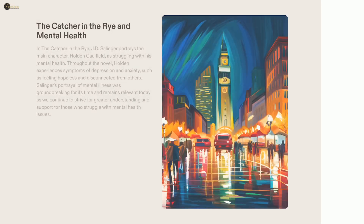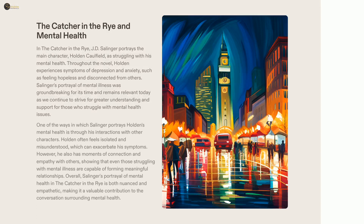J.D. Salinger's novel, The Catcher in the Rye, offers a nuanced and sympathetic exploration of the complexity of mental health through its protagonist, Holden Caulfield. The novel delves into themes of mental health, loneliness, and the difficulty of understanding and connecting with others. Salinger's revolutionary portrayal of mental illness continues to have a lasting impact, inspiring us to build greater understanding and support for those dealing with these issues.